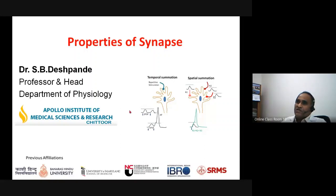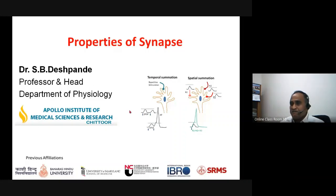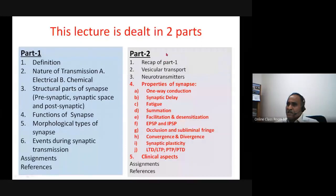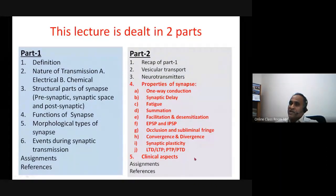In today's lecture I am focusing on the properties of synapse, which is one of the important aspects in understanding various synaptic events, synaptic physiology, pharmacology, and clinical aspects. This is part three; in previous classes I covered the definition and nature of transmission, types of synapse, vesicular transport mechanism, and neurotransmitters. Today I will be dealing with the properties of synapse and the clinical aspects.